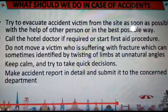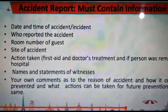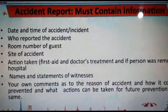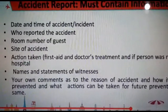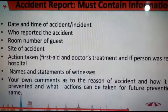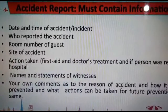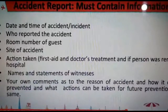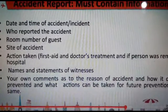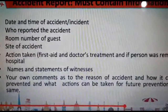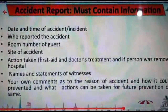We should call the hotel doctor if the person needs first aid, and not move a victim who may have a fracture — identifiable by twisting of limbs or unnatural angles. Make a report of the accident in detail and submit it to the concerned department, such as the security team. The details must include: date and time of accident, who reported it, room number of the guest, site or location, action taken, first aid and doctor's treatment, whether the person was removed to hospital, names and statements of witnesses, how the accident took place, and the major fault if identified. With this we finish section 8 of unit 5.